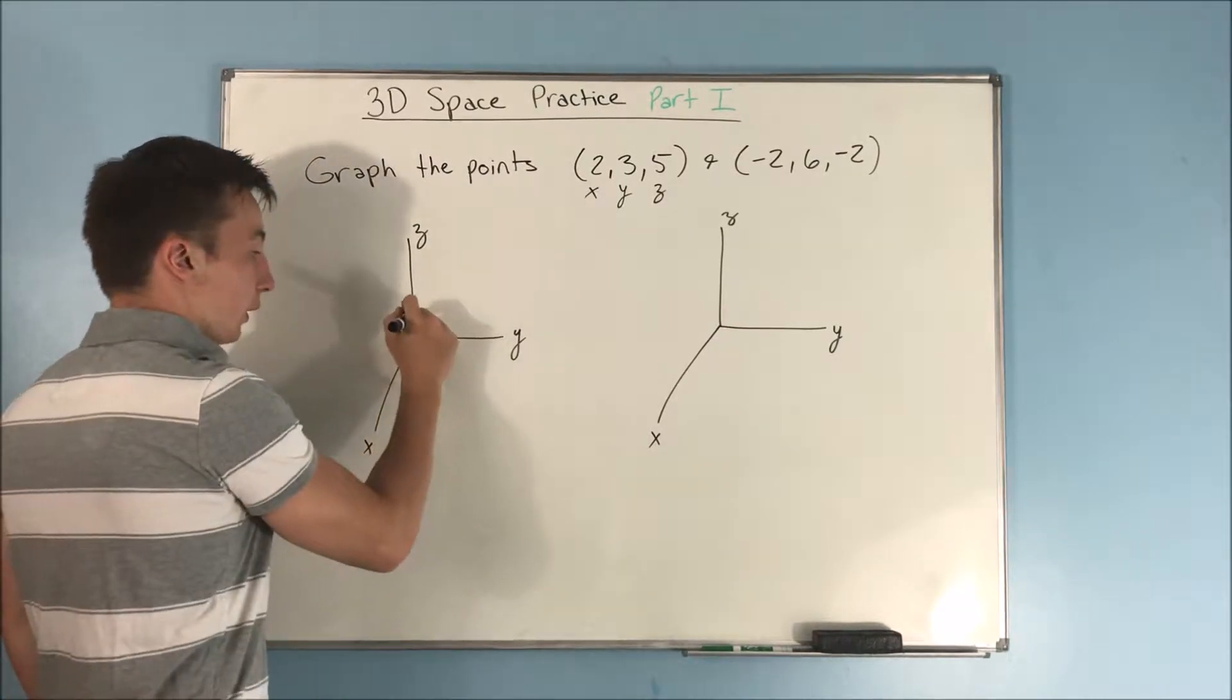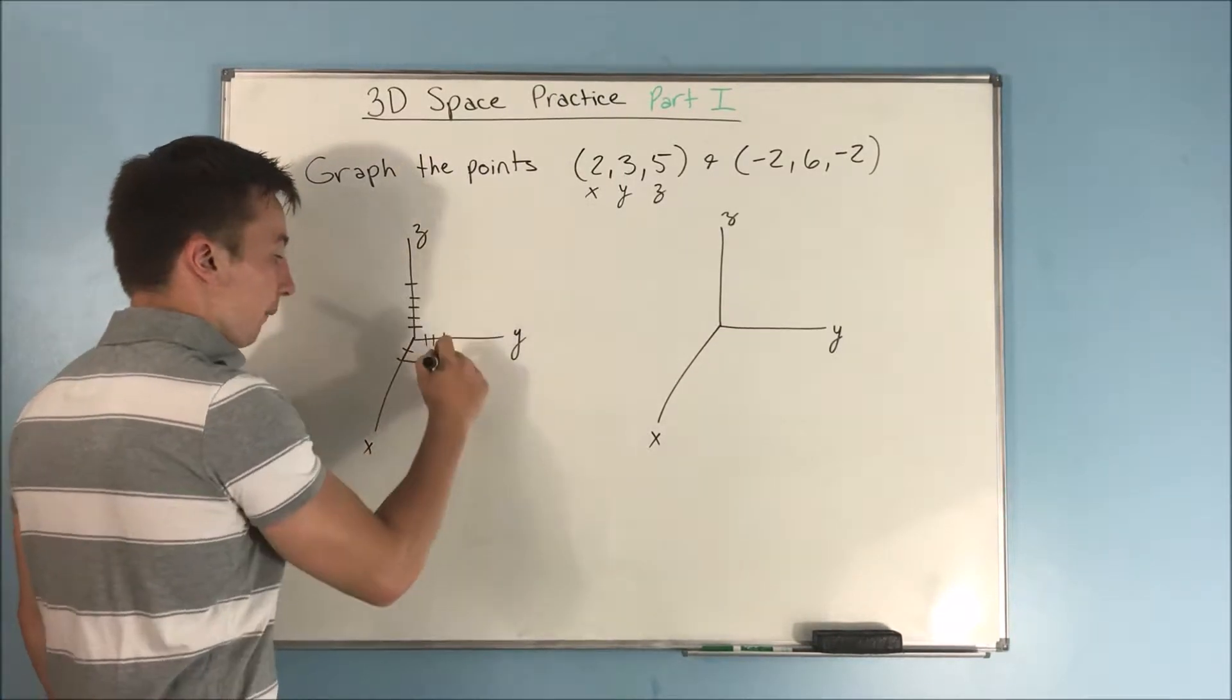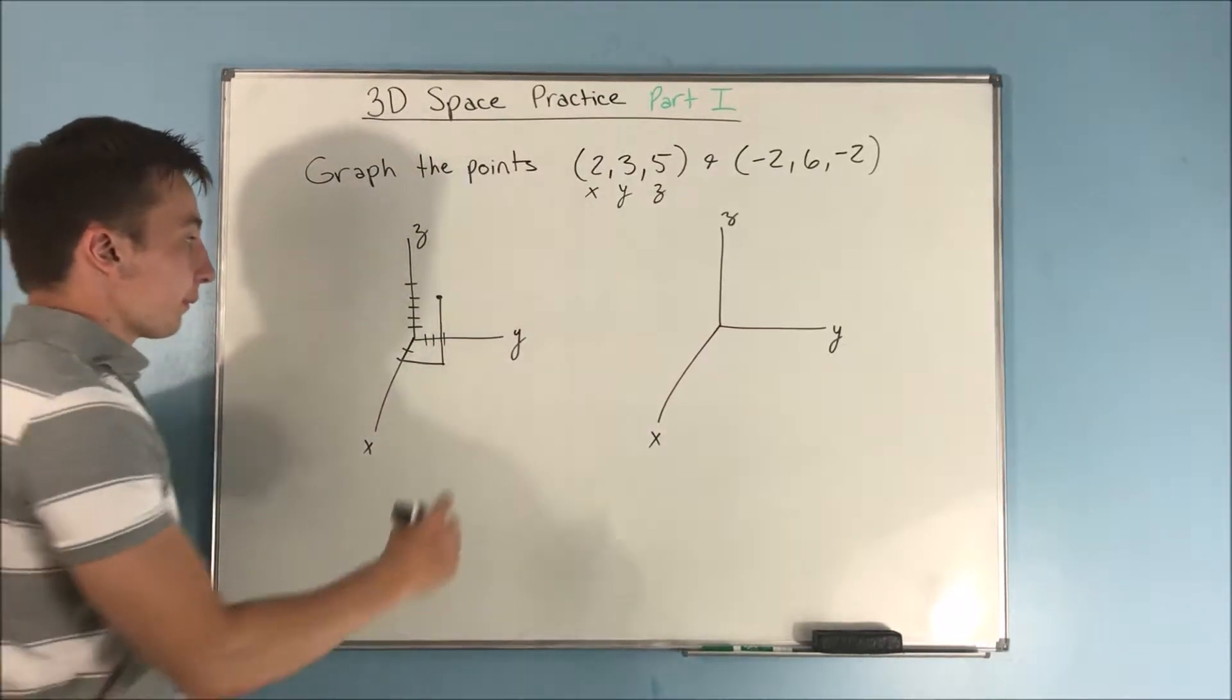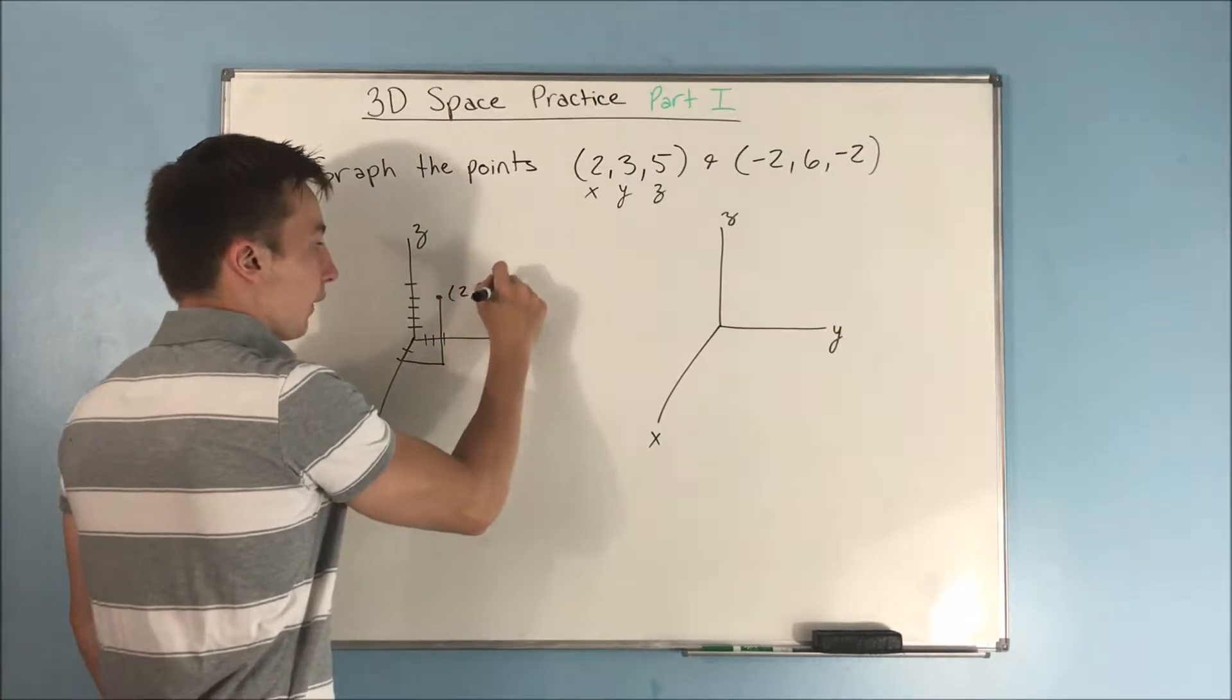Now we're going 5 up. 1, 2, 3, 4, 5. And we go up to about there is probably good. And that is our 2, 3, 5.